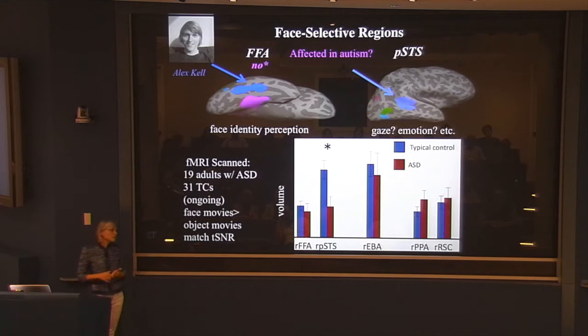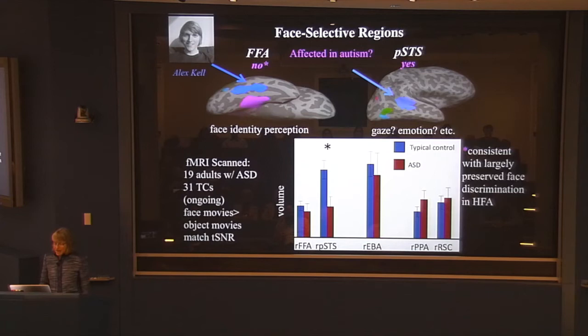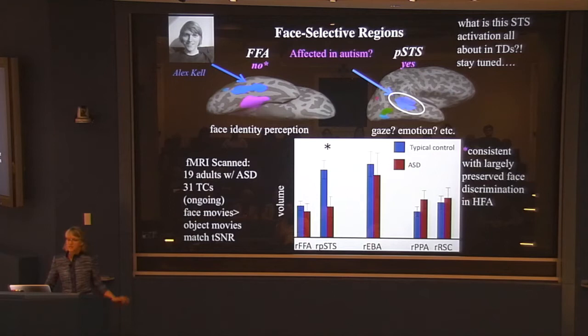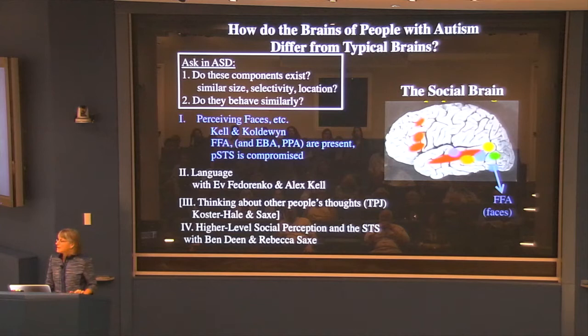These regions are bigger in the right hemisphere than the left, and there's no difference in the degree of lateralization of these face regions between autism and typical subjects. We'll get to language, where we do see differences. I'm not surprised the FFA seems different — it's doing basic perceptual face discrimination. But it's cool that this STS region is different, and that really underlines the need to understand what that region is all about in typical subjects.